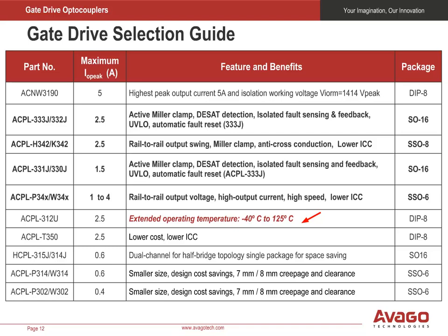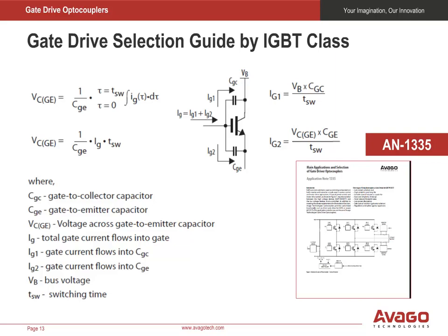The formulas here show you how to calculate the gate current through the gate emitter capacitor and the gate collector capacitor. The total drive current needed is the sum of both currents. The formula is discussed in greater detail in Avago application note AN1335. The example here is for a 1200 volt, 200 amp IGBT that has a gate to emitter capacitance of 50 nanofarads and a Miller capacitance, that is the gate to collector capacitance, of 500 picofarads.